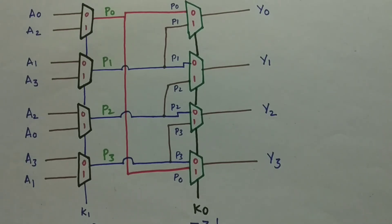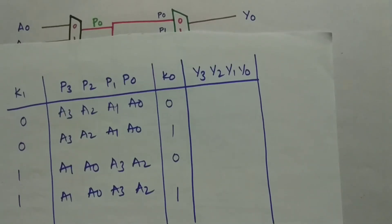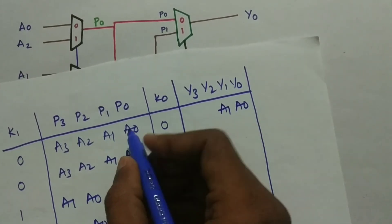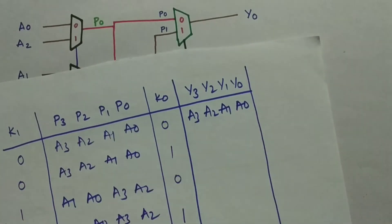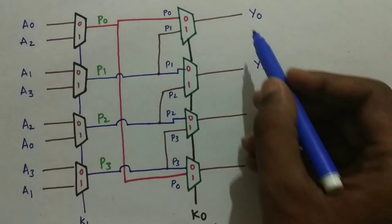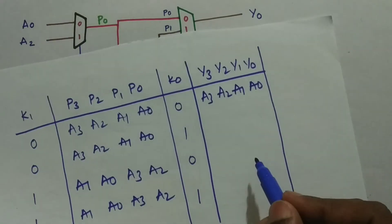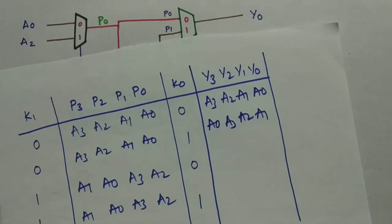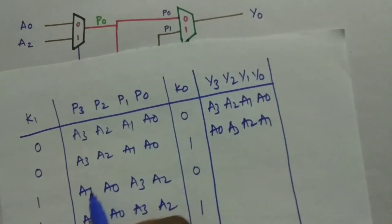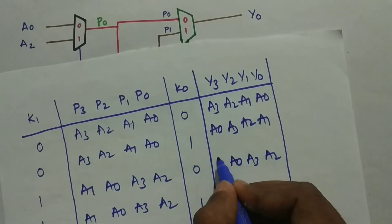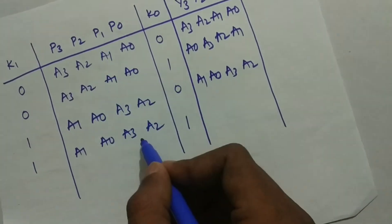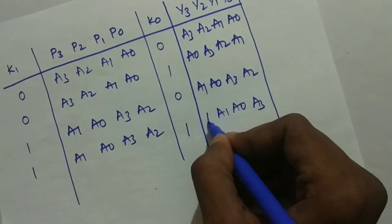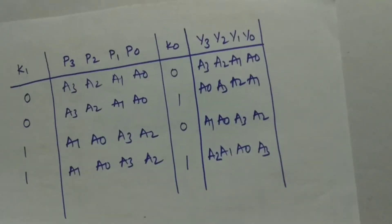Looking at the truth table: when K0 is 0, Y0=P0 (which is A0), Y1=P1, Y2=P2, Y3=P3. When K0 is 1, Y0=P1, Y1=P2, Y2=P3, Y3=P0. So when K1 is 1 the first stage passes A2, A3, A0, A1; then with K0=1 the second stage shifts those by one more position. The truth table confirms these mappings clearly.